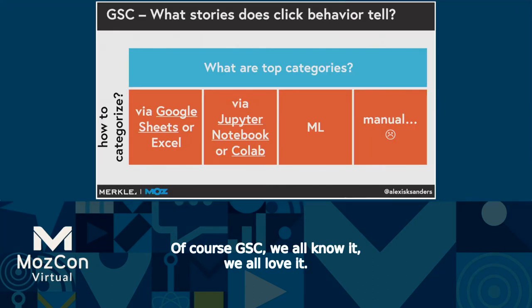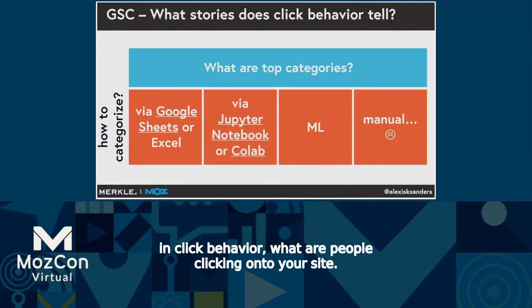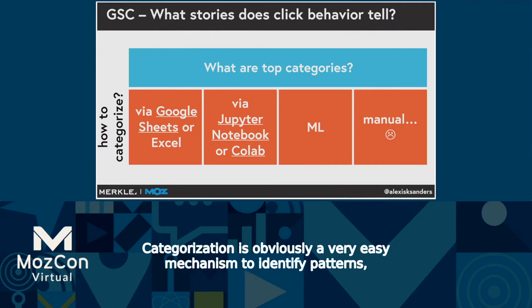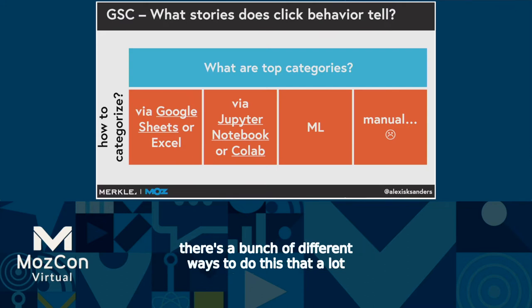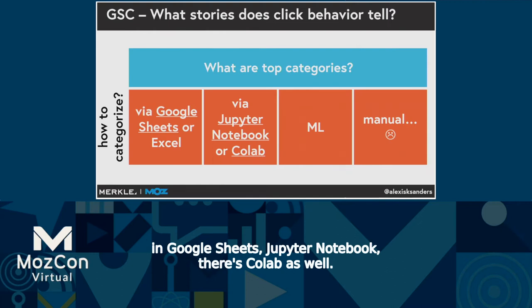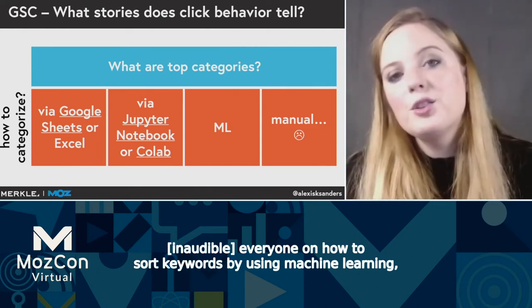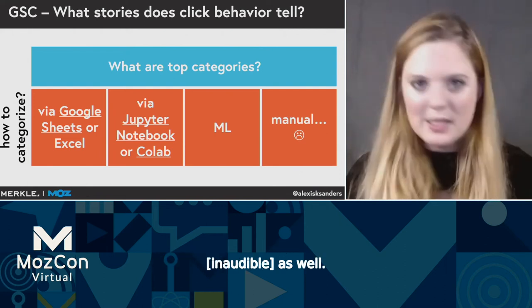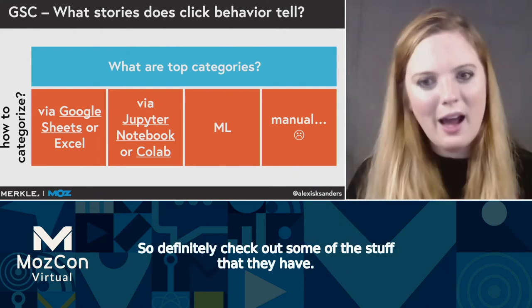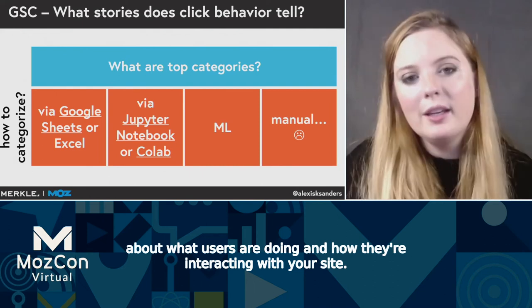Of course, GSC — we all know it, we all love it. There are a lot of stories to tell in click behavior: what are people clicking onto your site? Categorization is an easy mechanism to identify patterns. There are a bunch of different ways to do this — I have some links in this presentation for how to do it efficiently in Google Sheets, Jupyter Notebooks, and there's a co-lab as well. You could also do it using machine learning. There's been great suggestions by Brittany Miller and Hamlet Batista on how to sort keywords using machine learning. But you can also do it manually.